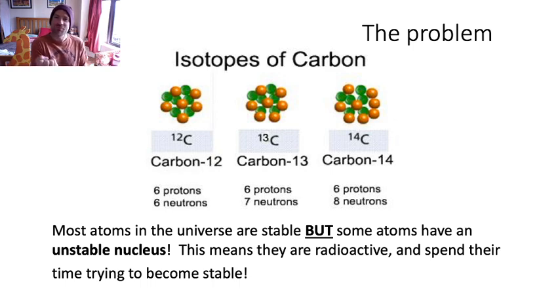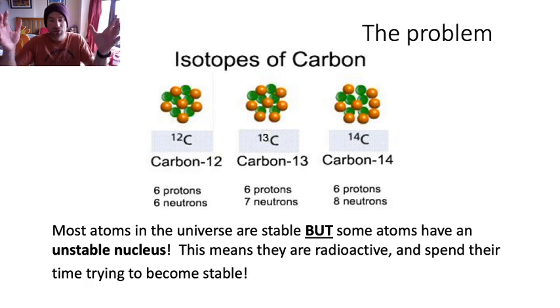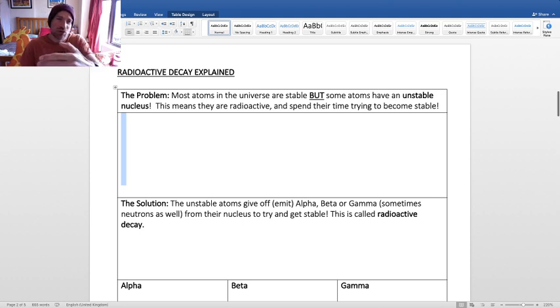If we look at these three isotopes of carbon - they're all carbon because they've all got six protons but different numbers of neutrons. Carbon-12 has six neutrons, Carbon-13 has seven, and Carbon-14 has eight neutrons. Carbon-14, with six protons and eight neutrons, has an unstable nucleus. It doesn't sit stably and it needs to become stable. These atoms with unstable nuclei are radioactive.